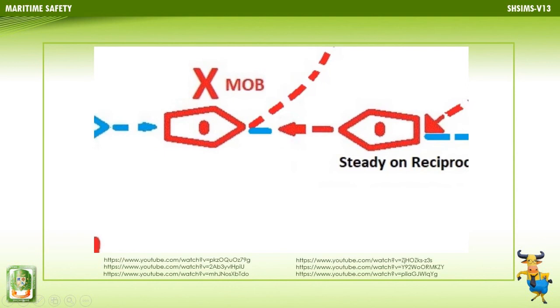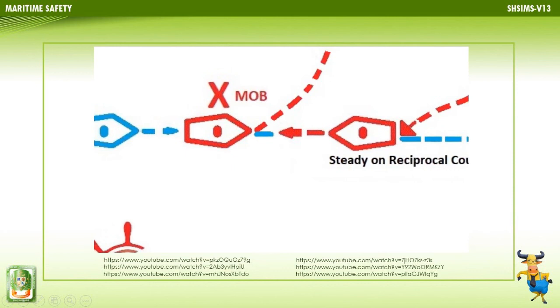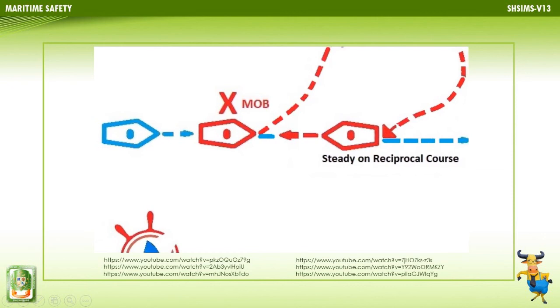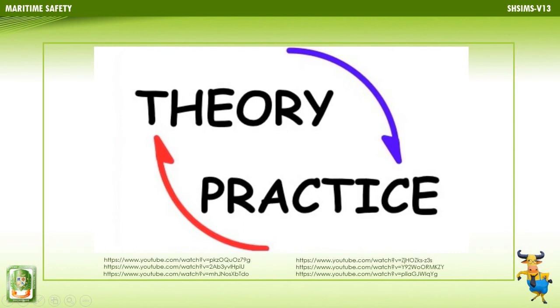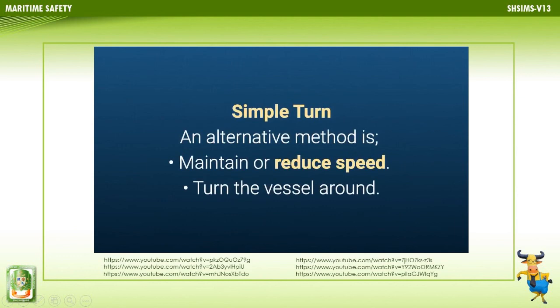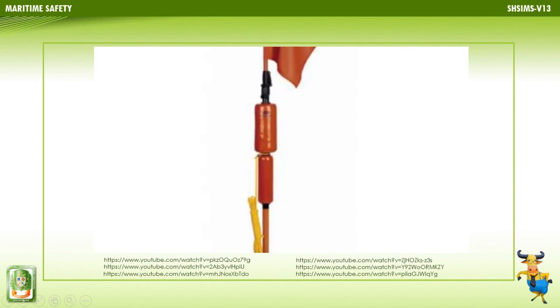The vessel initially describes one-fourth of a circle; when the helm is reversed, it describes three-fourths of an identical-sized circle. What needs to be known for this method to be fully effective is at what point on the initial turn the helm is reversed — this can only be established through practice and training. An alternative method is to maintain or reduce speed, turn the vessel around, and use the still-visible floating datum to turn onto the reciprocal water track.